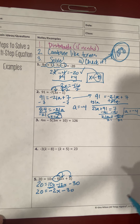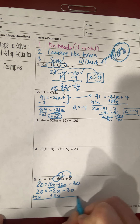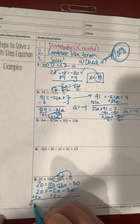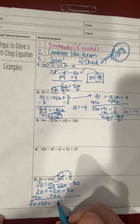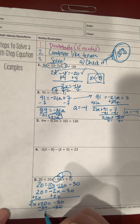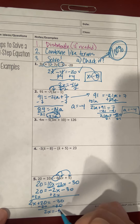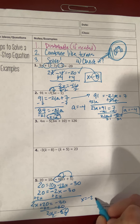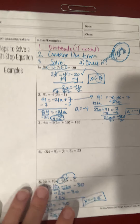I add 2x to both sides to move the variable left. 2x and 20 are unlike terms so they stay separated, giving 2x plus 20 equals negative 30. Subtracting 20 from both sides gives 2x equals negative 50, and dividing both sides by 2 gives x equals negative 25.